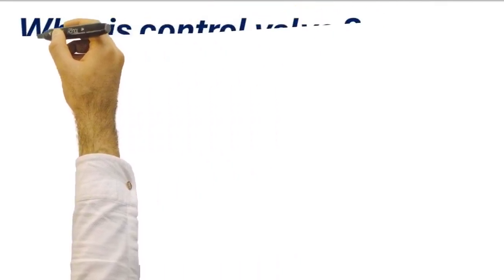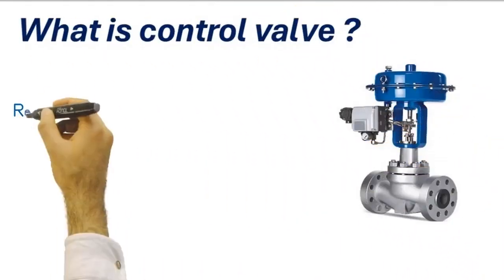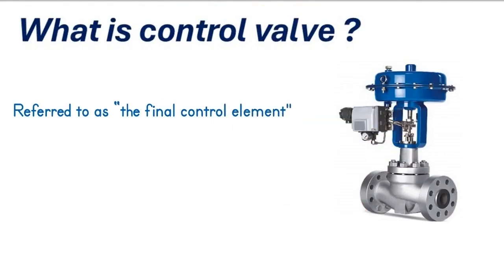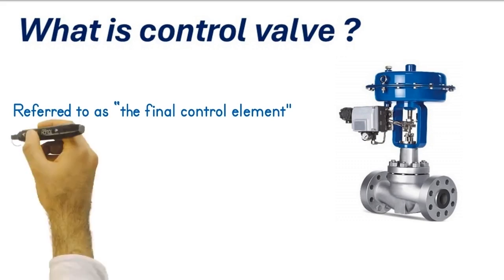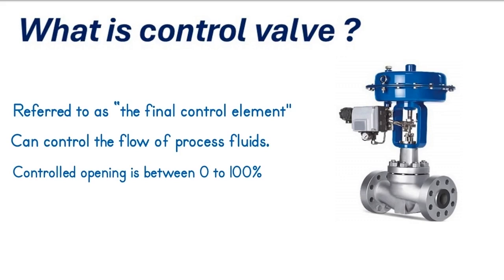What is a control valve? The control valve, often referred to as the final control element, is a critical part of any control loop. It is a device that can control the flow of process fluids because its opening can be controlled between 0 to 100 percent in response to a signal from an external control device.